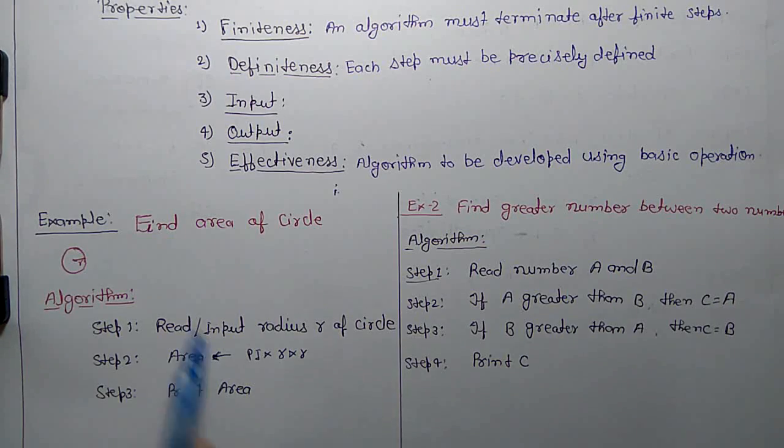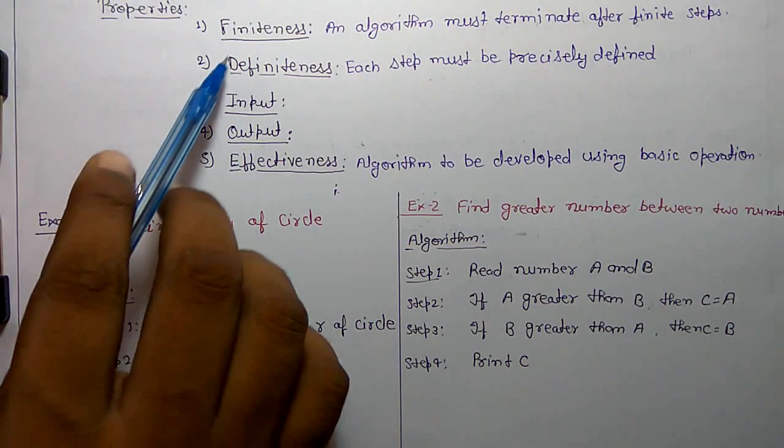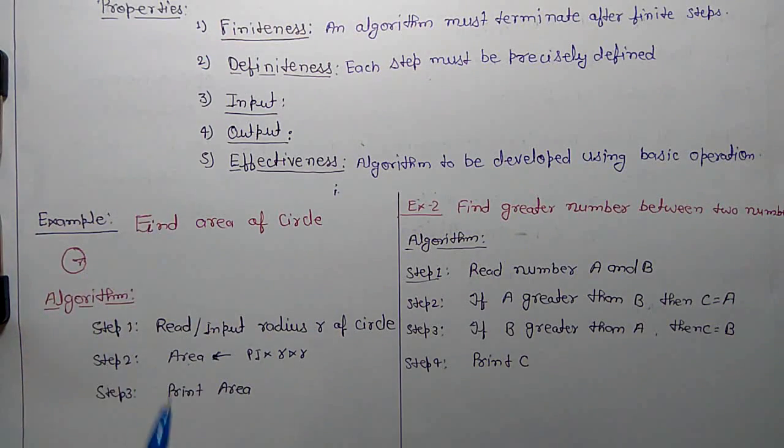Each step must be precisely defined, so second property also holds. There is some input and there is some output, and some basic operations are used, so it holds all the algorithm properties.